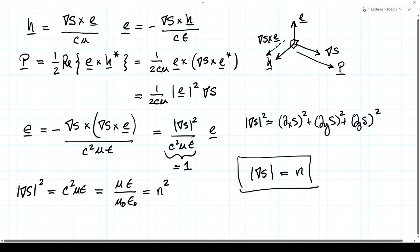That is called the Eikonal equation — from the Greek word 'eikon' (from which we get the word icon), referring to an image. This can be taken to be the basic equation of geometrical optics. It looks rather abstract right now, so let's work out what it means physically.